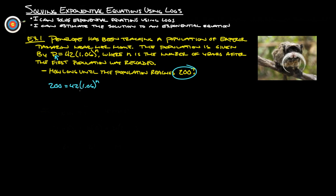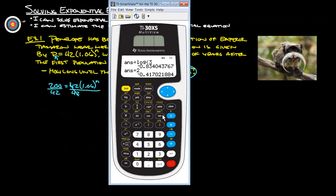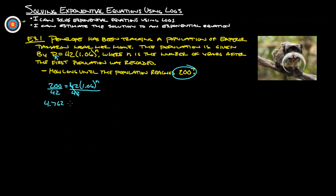But before we do that, we want to get this here all by itself. So we've got to get rid of this 42. The 42 right now is being multiplied by the 1.06^n. So to undo multiplication, we have to divide both sides by 42 first. So we get 200 divided by 42 gives us 4.762, equals 1.06^n. So now we can take the log of both sides. Log of 1.06^n. This n comes out front. So we get n log 1.06 equals log 4.762 and divide both sides by log 1.06.